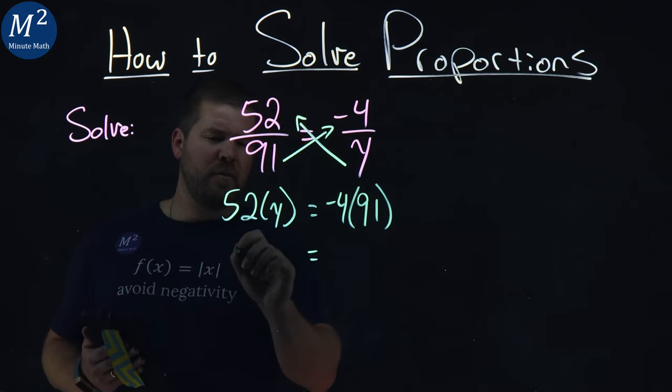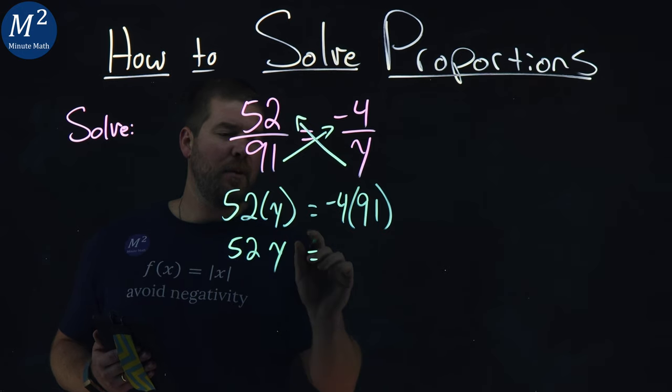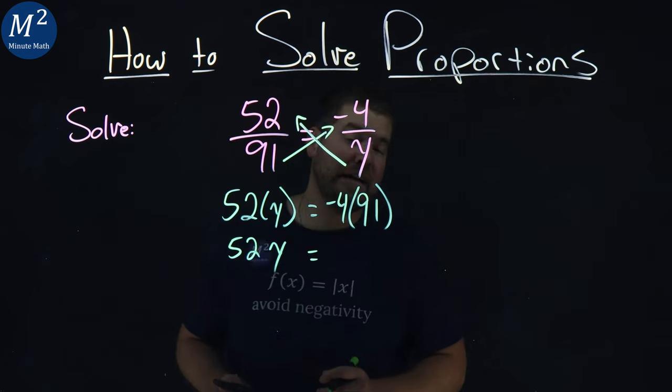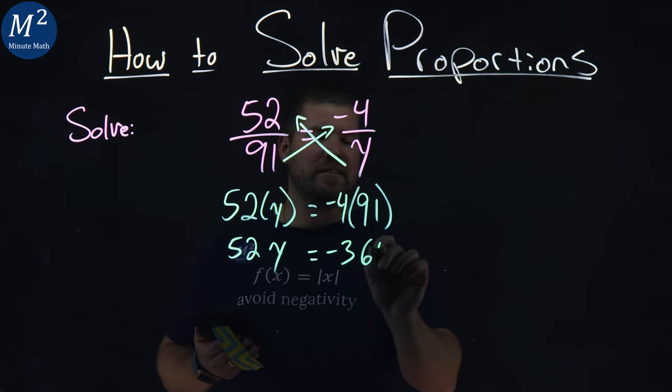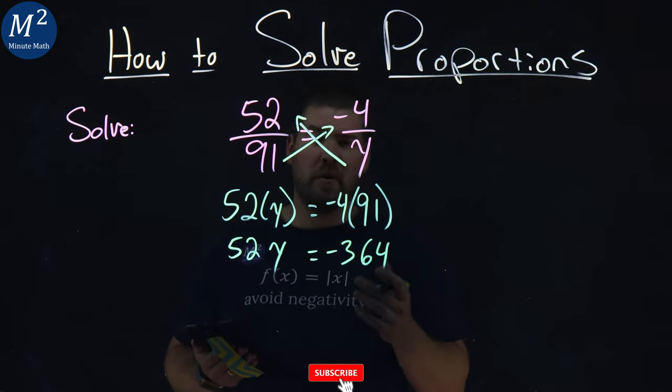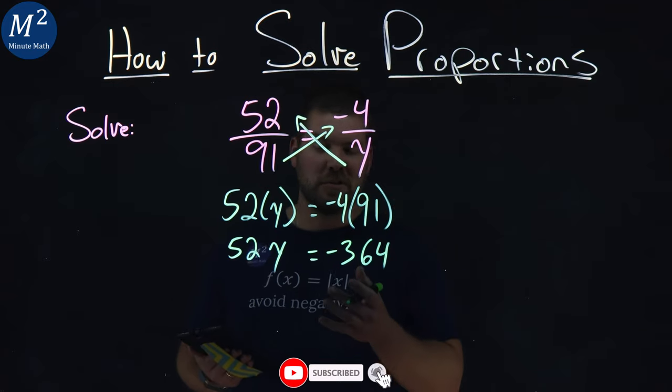Now, the left-hand side I'm going to rewrite as just 52 times y, but the right-hand side I have to multiply negative 4 times 91, which is negative 364. Use your calculator if you want, or you can do it by hand.